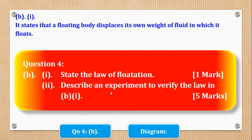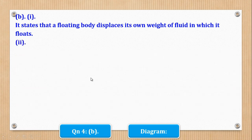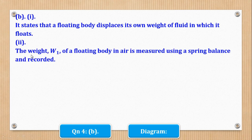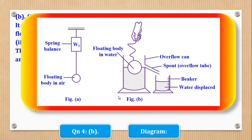Now let's go to Roman 2, which says: describe an experiment to verify the law. First, the weight W1 of the floating body in air is measured using a spring balance and recorded. This is the floating body in air connected to the spring balance, and its weight W1 is measured and recorded.